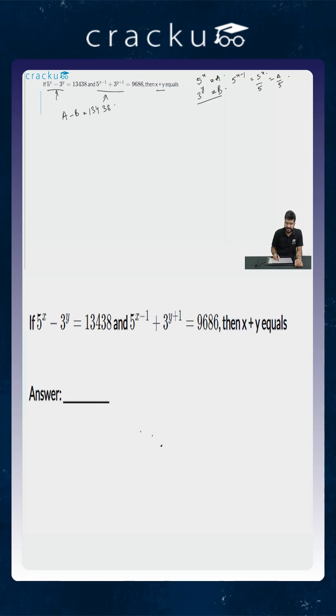Similarly, as 3 to the power y is equal to b, 3 to the power y plus 1 is equal to 3 into 3 to the power y, which will equal 3b. So the second equation will be a by 5 plus 3b is equal to 9686.